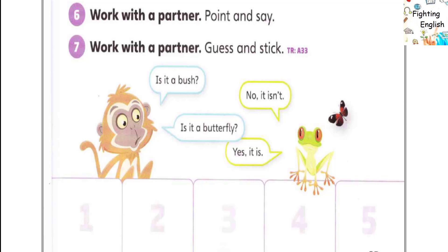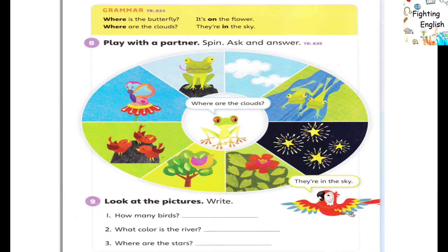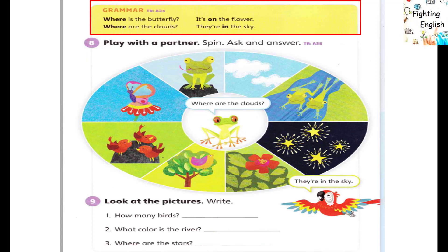Is it a butterfly? Yes, it is. Grammar: Where is the butterfly? It's on the flower. Where are the...